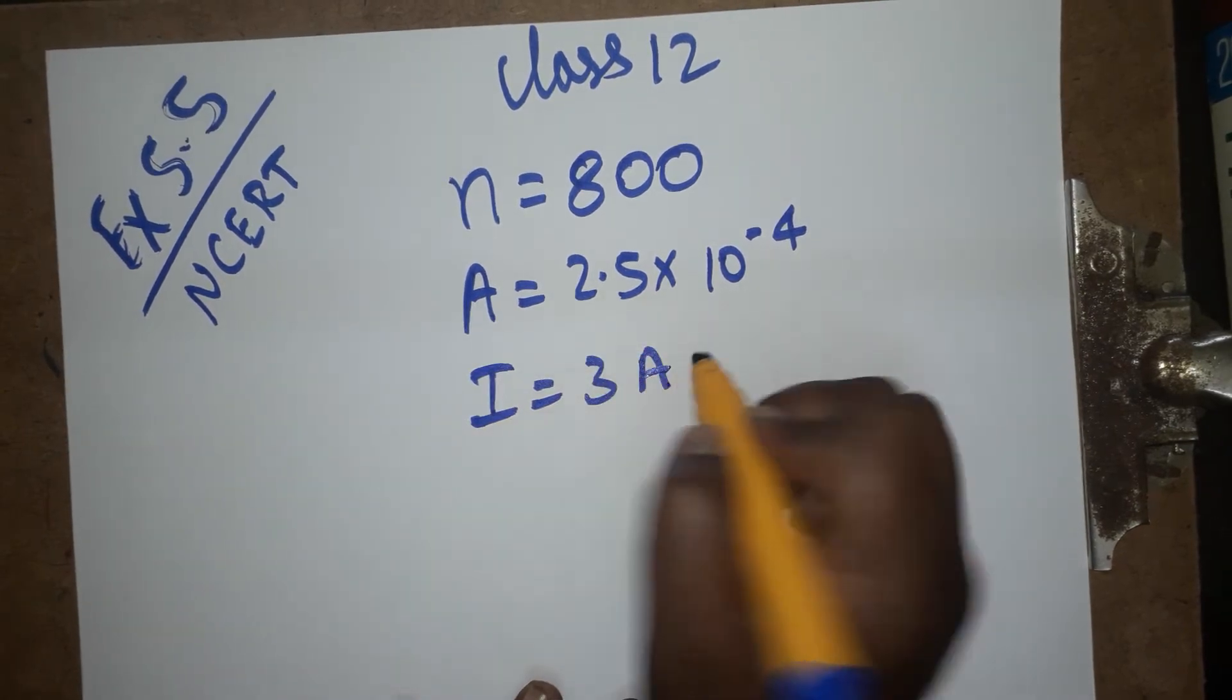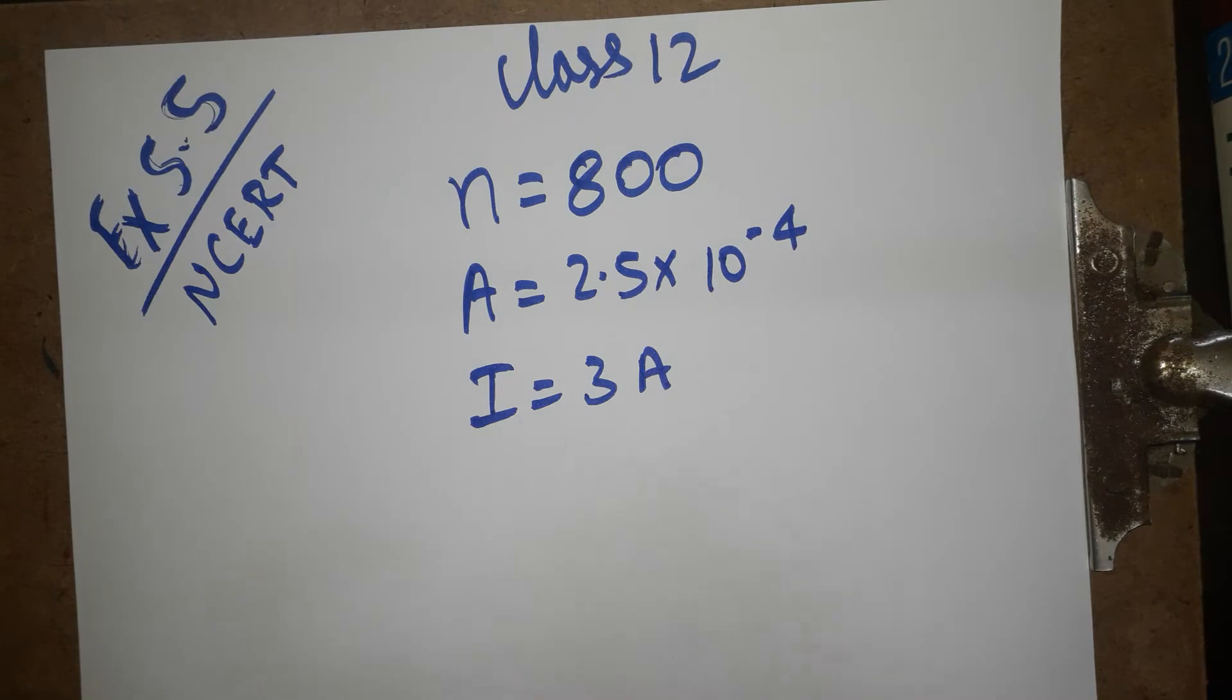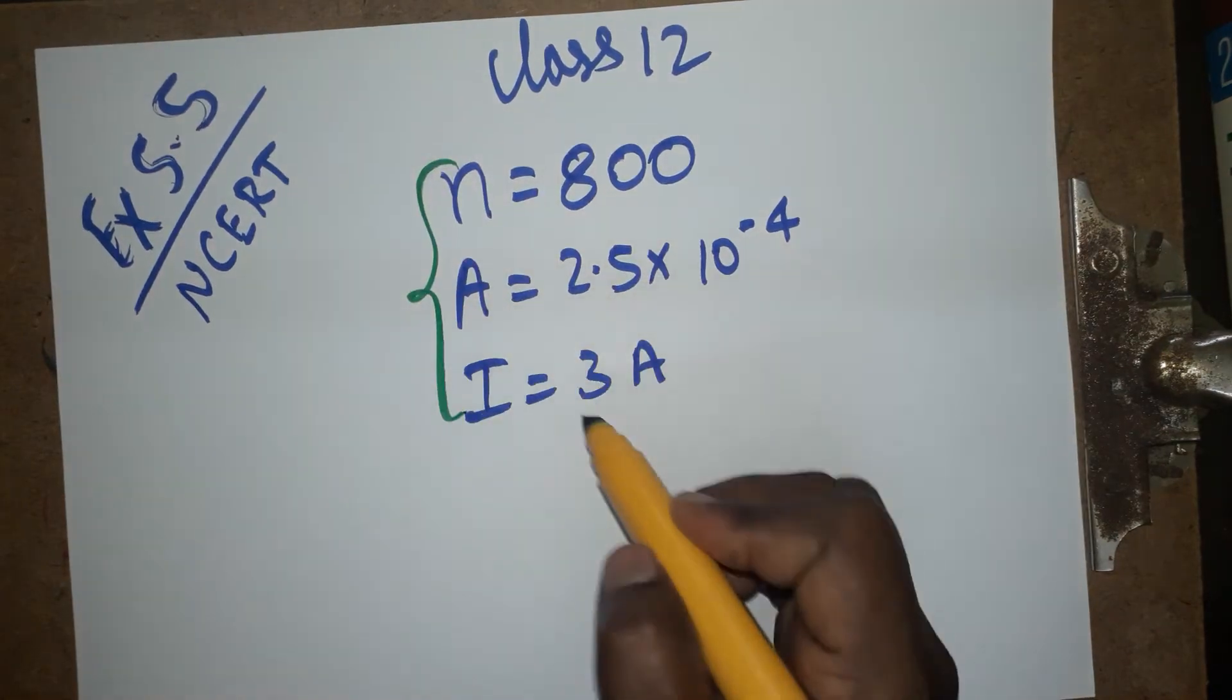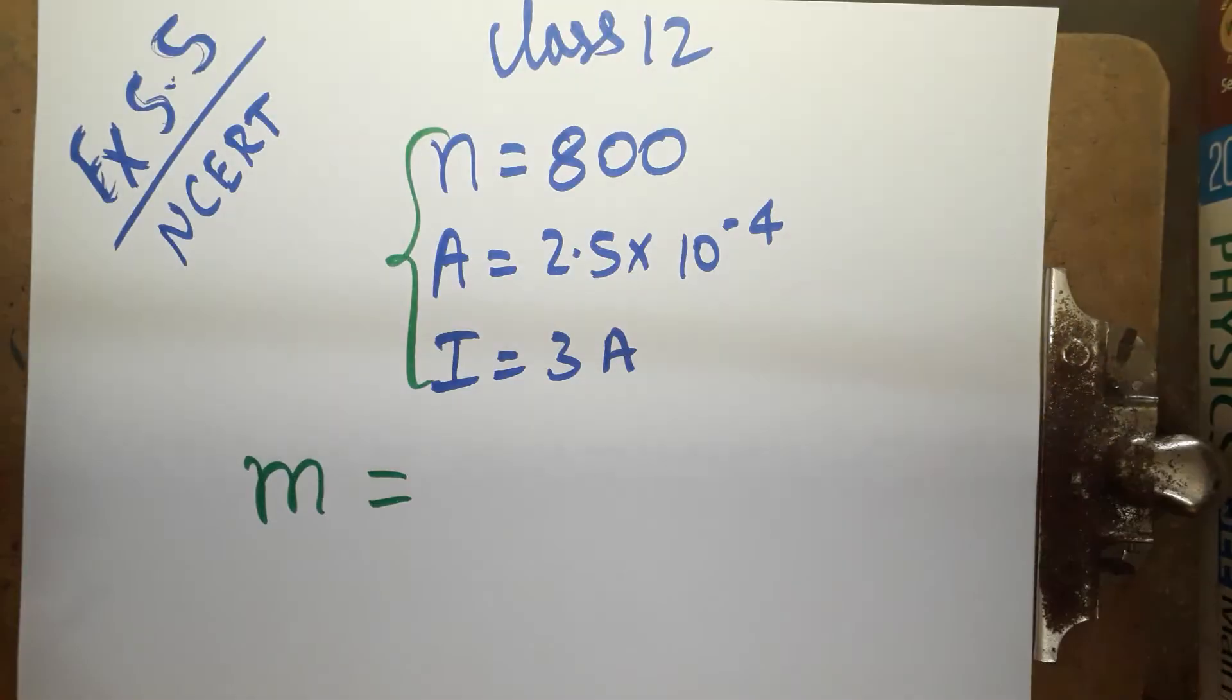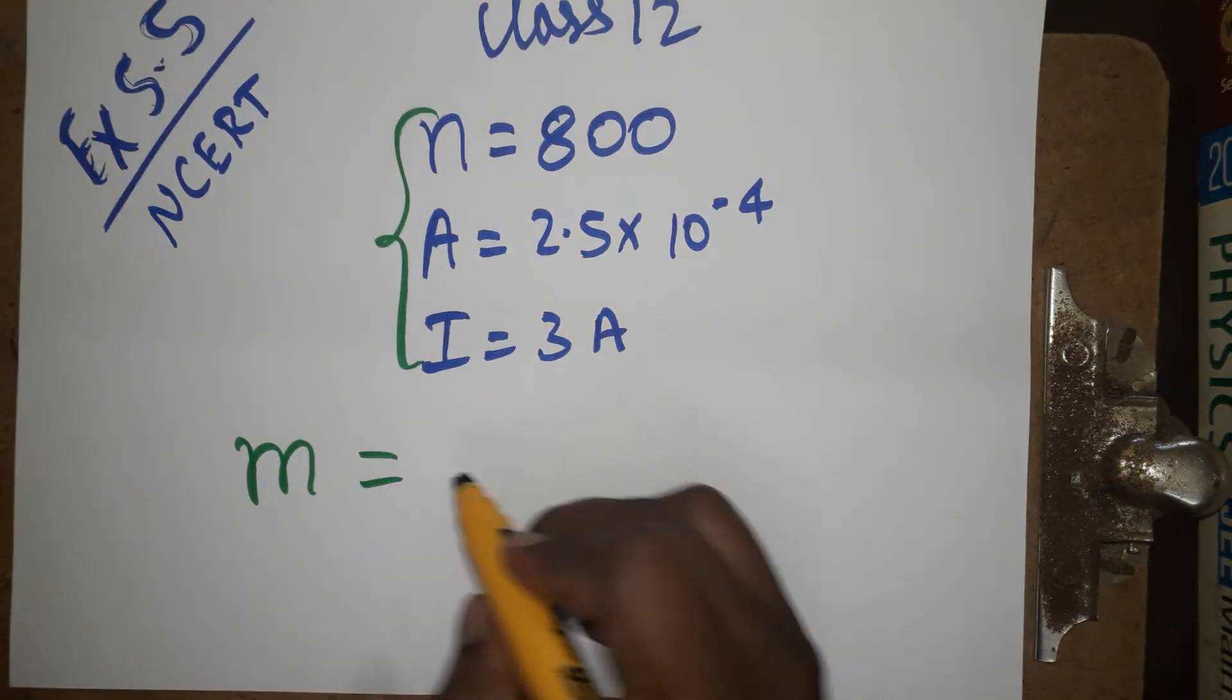They asked what is the magnetic moment. So magnetic moment is very simple using this relation. We can write magnetic moment m is equal to n I A. So n is 800, current is flowing 3 ampere.